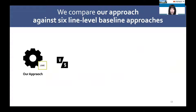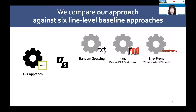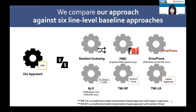We compare our approach against six baseline line-level approaches from prior literature: random guessing, two static analysis tools — Google Error Prone and PMD — an N-gram model, and two traditional model interpretation-based approaches using logistic regression and random forest.